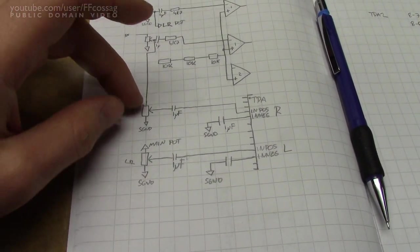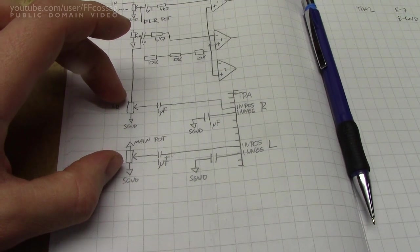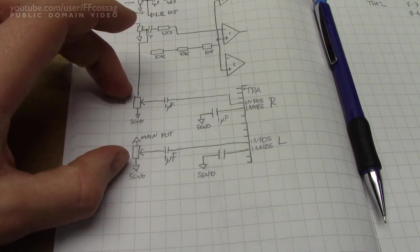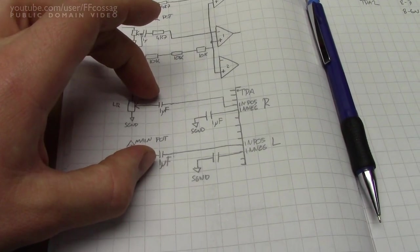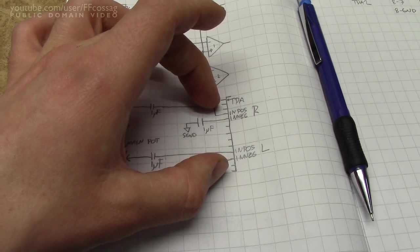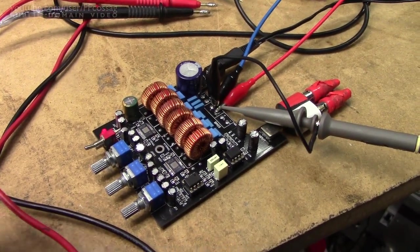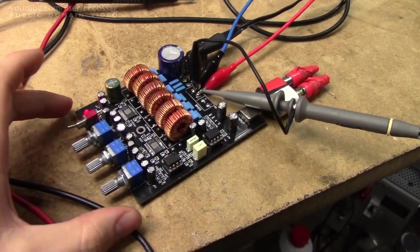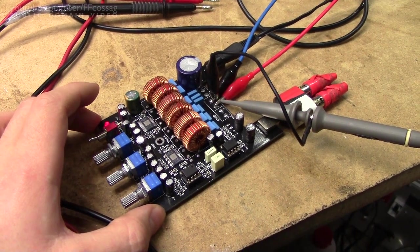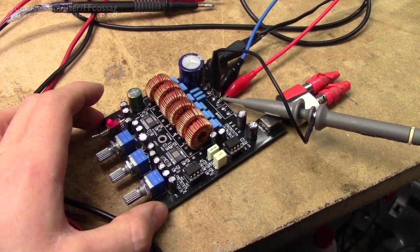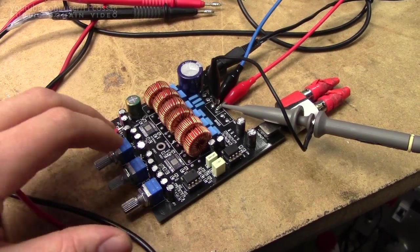Instead, the signal just goes straight to the left and right potentiometer to an output cap and straight into the TPA3116. So left and right channels on this board are not buffered by an op-amp - they're just going straight into the chip. That doesn't leave many sources of noise.